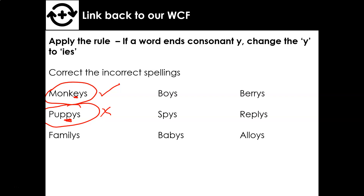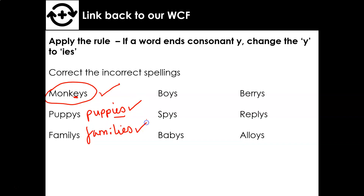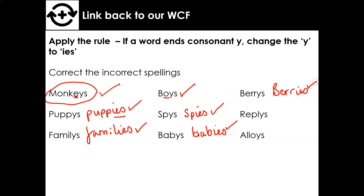Let's get ready to mark — if you have a different coloured pen, that would be useful. We need to change 'puppies' to end with IES. We need to change 'families' also to end in IES. The word 'boys' can stay the same because the letter before Y is a vowel. 'Spies' must change. 'Babies' must change too. 'Berries' — we need to change that one. 'Replies' must also change. And finally, 'alloys' — the letter before Y is a vowel, so that one's correct. Go through and check your answers — you can give yourself a mark out of 9.